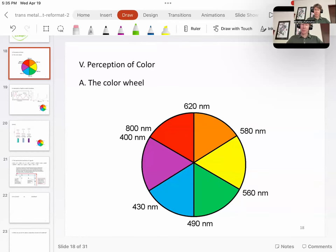Next, let's talk about perception of color. I've got a picture of a color wheel, and first off, color wheels and the exact wavelengths are a little different depending upon who you ask.